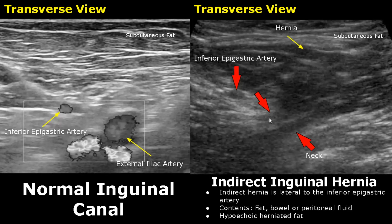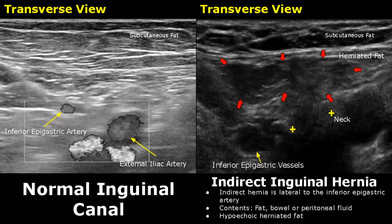The contents can be fat, bowel, or peritoneal fluid. In this case we see hypoechoic herniated fat. This is another case of an indirect inguinal hernia — we see herniated fat lateral to the inferior epigastric vessels. This right here is the neck.